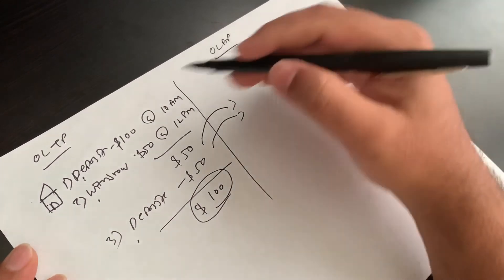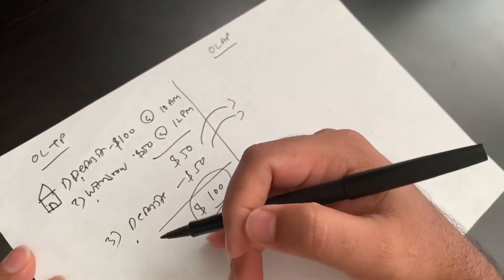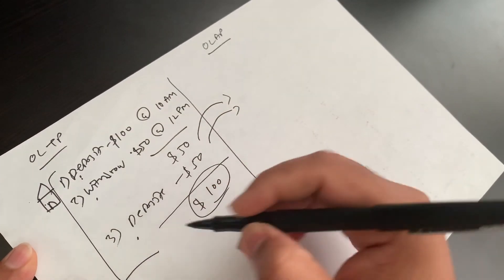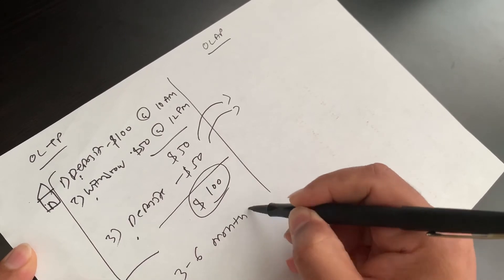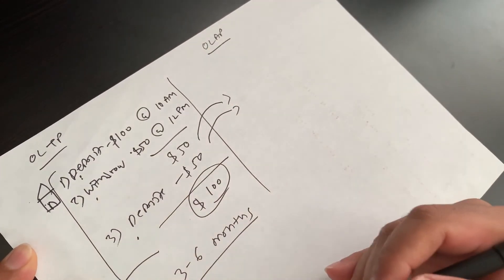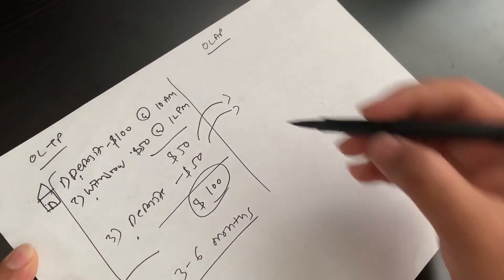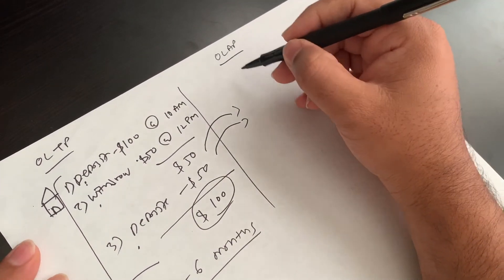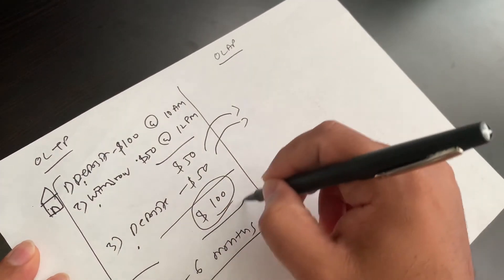They don't need all the history. Here is partial history, and all three transactions they will keep maybe for three or six months. If you want each transaction, maybe they will keep three to six months, depending on the company. But in OLAP, they will record not all transactions, but the main transaction.